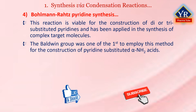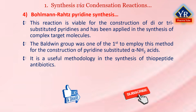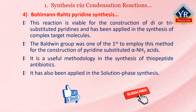The Baldwin group was one of the first to employ this method for the construction of pyridine-substituted alpha-amino acids. The Bohlmann-Ratz pyridine synthesis is a useful methodology in the synthetic approach for thiopeptide antibiotics. It has also been applied in the solution phase synthesis of a library of functionalized pyridine scaffolds, as well as the preparation of a 2,3,6-terpyridine scaffold as an alpha-helix mimetic.